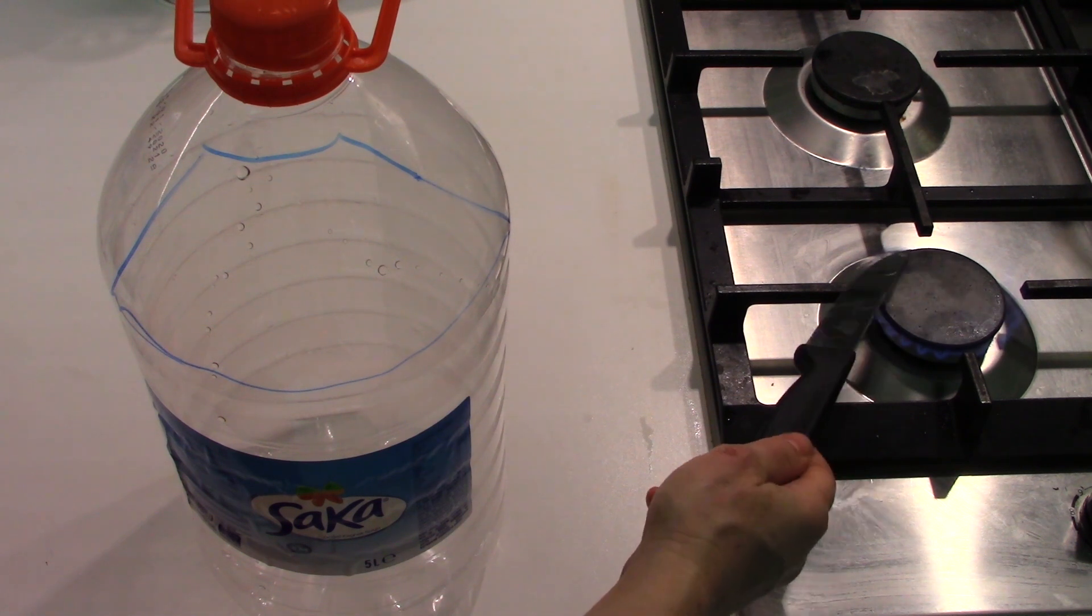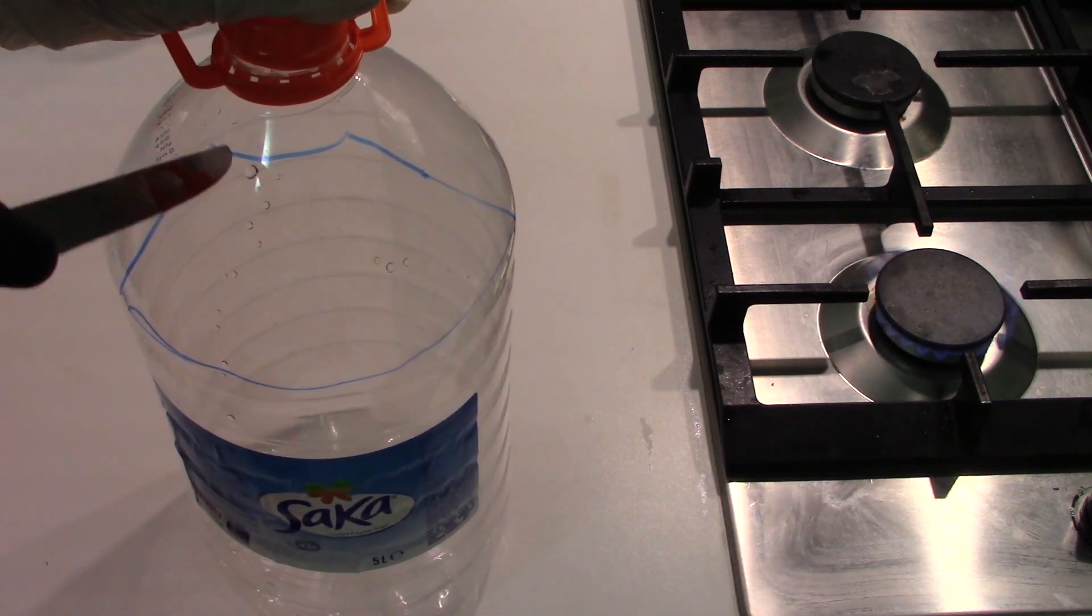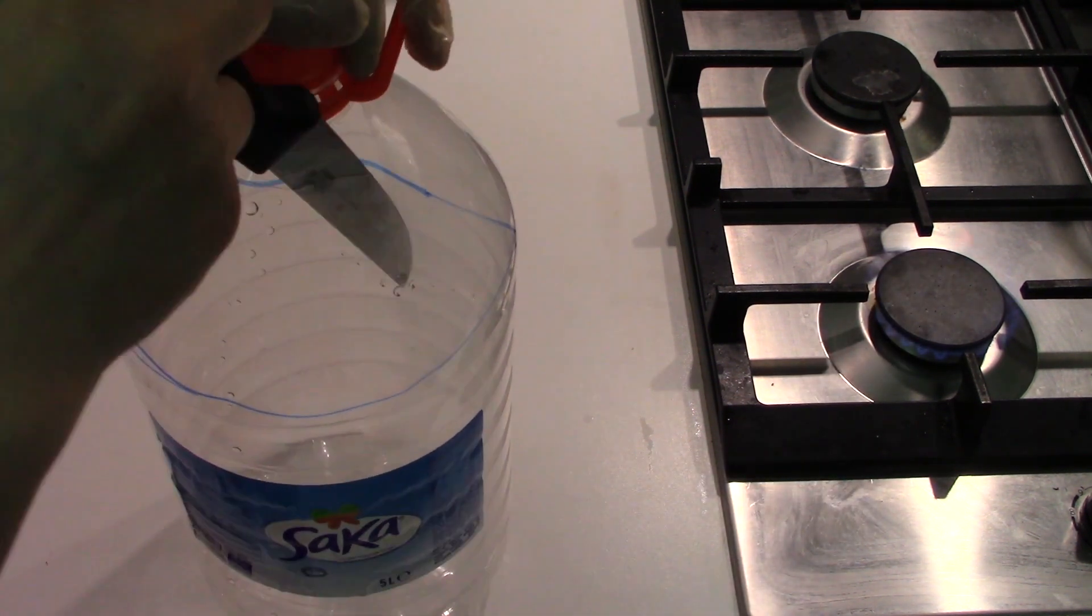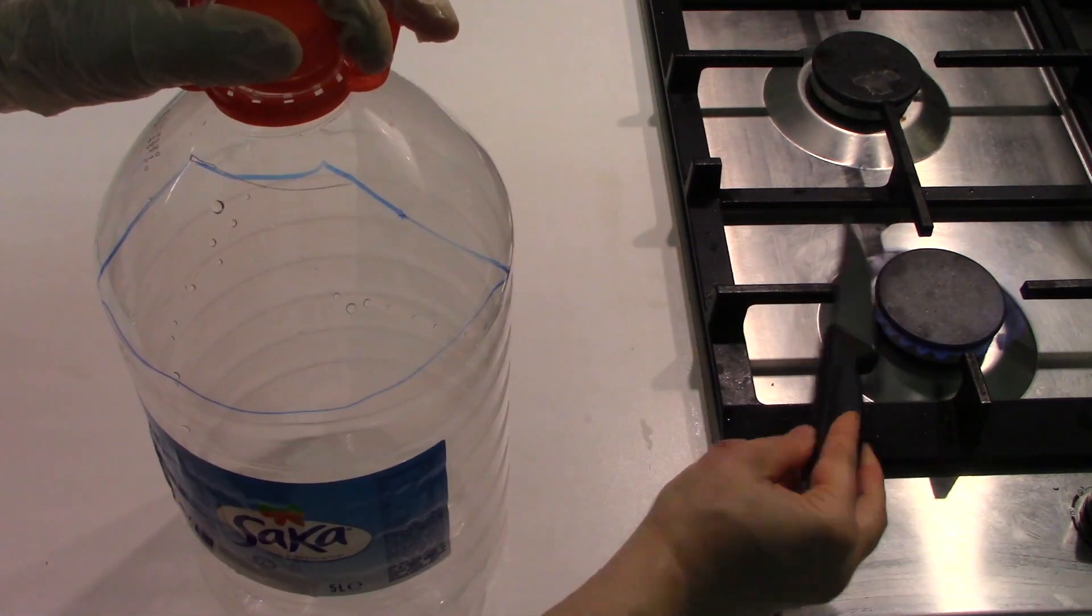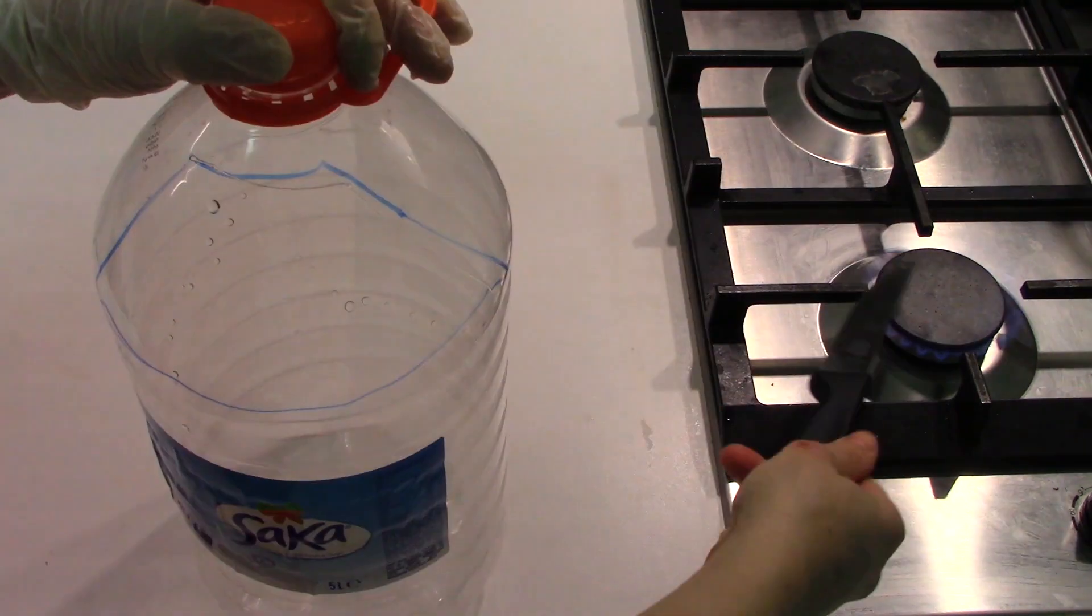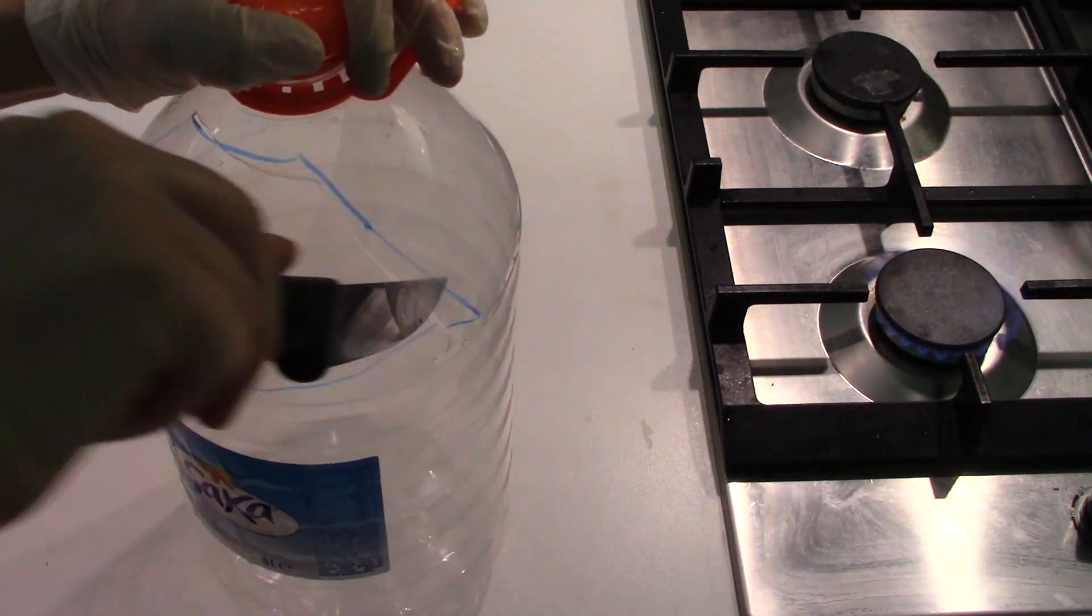The next step is to get a good knife and heat it up on the stove and start cutting it. Heating up the knife will make the plastic melt and easy to cut through.